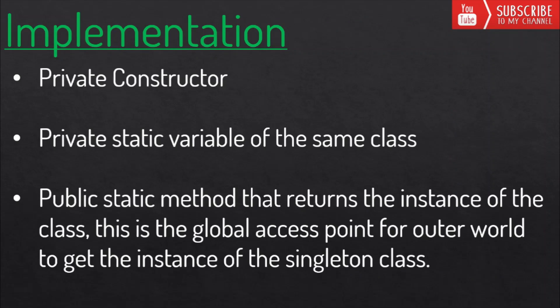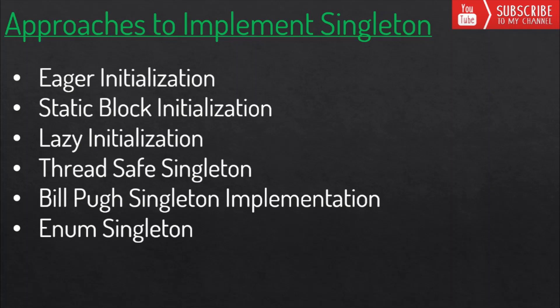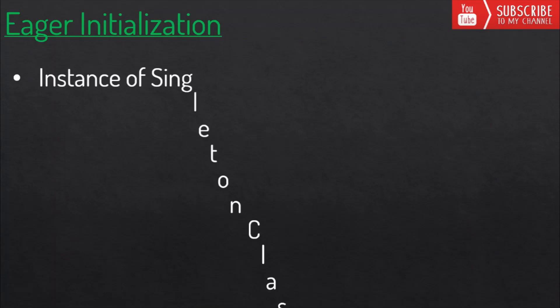Now let's see the different approaches of singleton pattern implementation. We have eager, static block, and lazy initializations. In addition to that, we also have thread-safe singleton, Bill Pugh singleton implementation, and singleton implementation using enums. Now let's start with eager initialization.